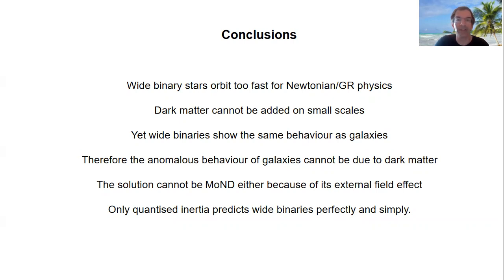The dark matter models predict that it must stay spread out from galactic scales. But wide binaries show the same behavior as galaxies. So we can conclude from this that the anomalous behavior of galaxies cannot be due to dark matter.